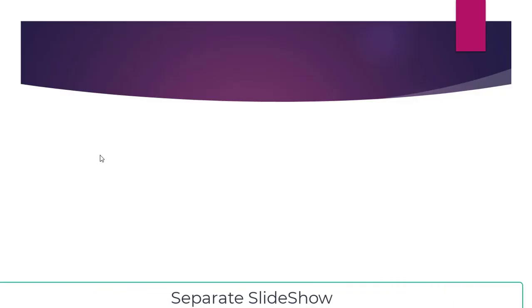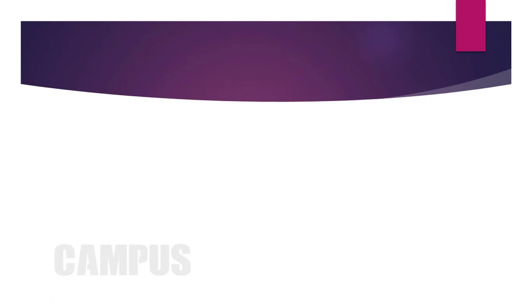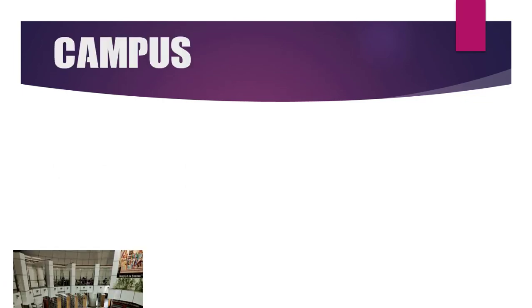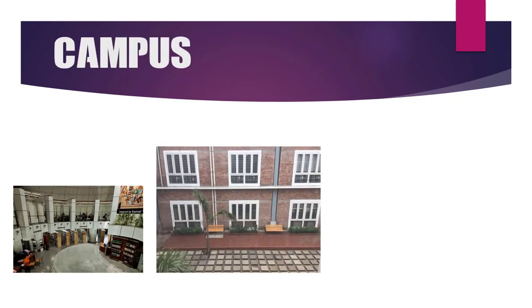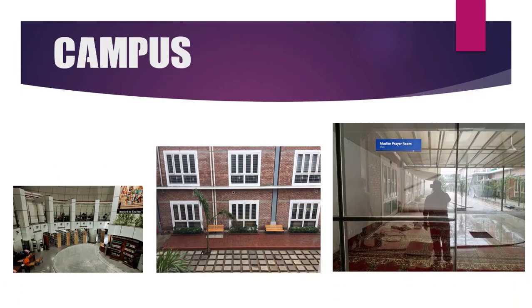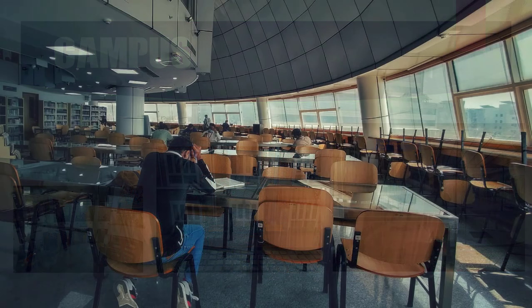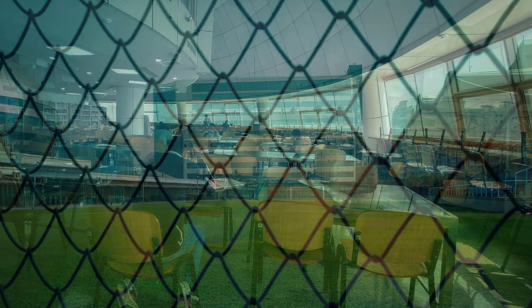I am double clicking. See? The file has been opened in slideshow mode. So if I click on the mouse, then transition will be started — like this, like this.